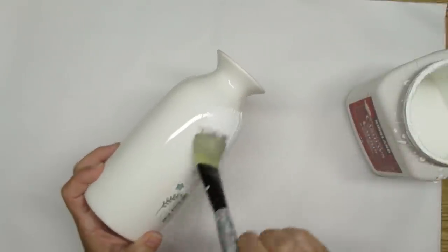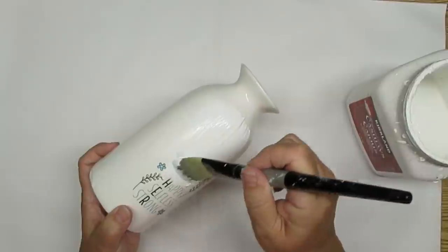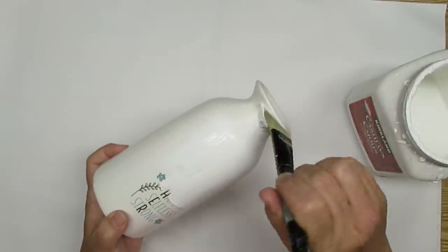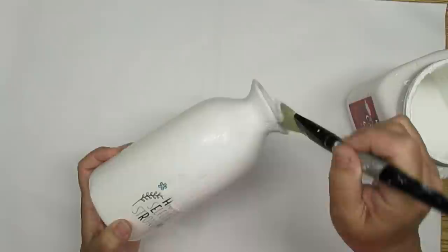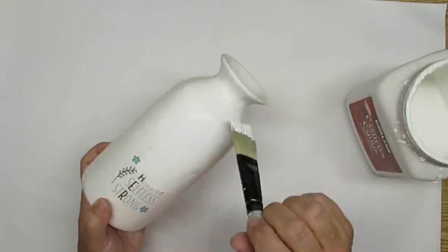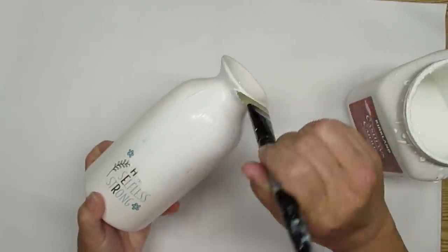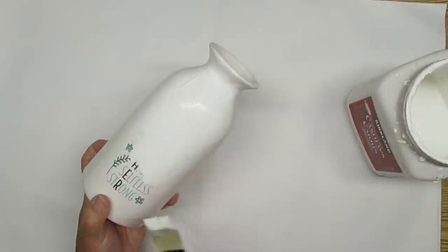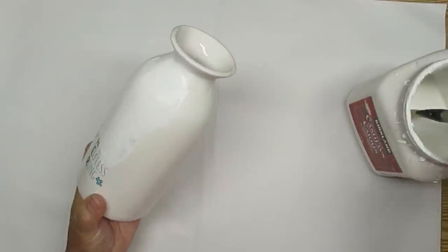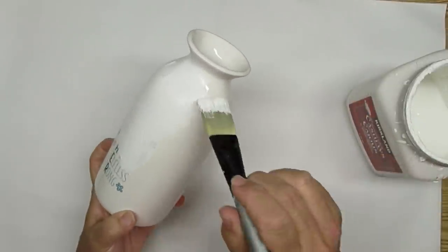I'm going to take this jug from my Dollarama store and give it a couple of coats, just the top half, with some DIY chalk paint. This wasn't the original plan for this item. I was hoping I'd be able to get that printing off, but I was not able to do that. So that's why it's getting the paint.